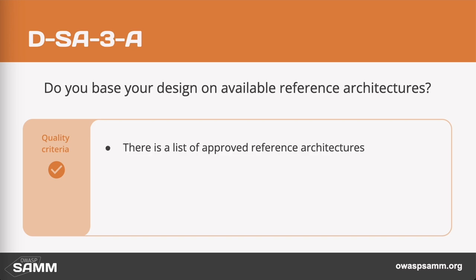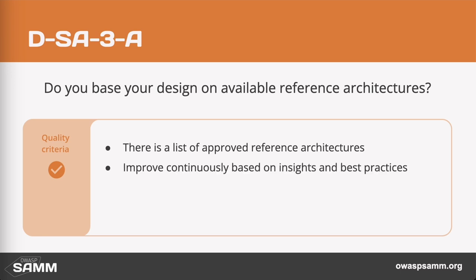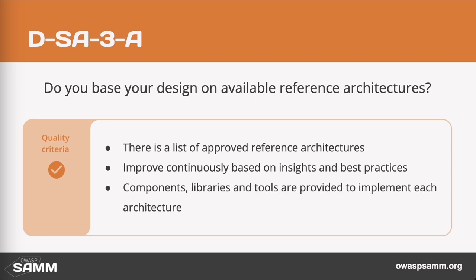At level three, this is where you have full-blown reference architectures available in a catalog. They are well understood — the development and architect teams know where to look for them and how to use them. The reference architectures are being reviewed and kept up to date. Finally, the last quality criteria requires that the reference architectures materialize in a set of software libraries and tools upon which project teams build their software.